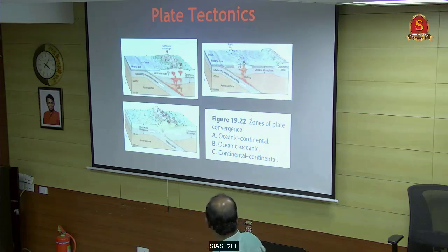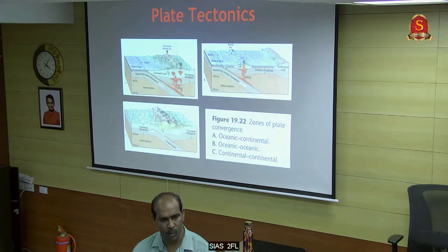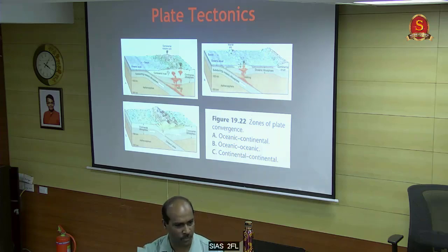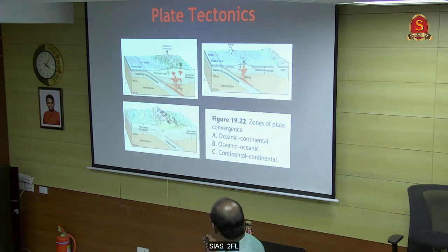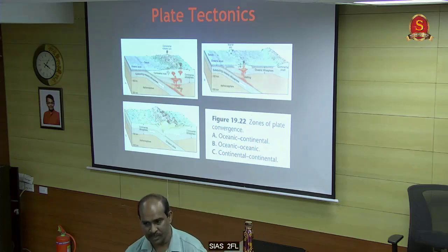Ocean-ocean collision - when two ocean plates collide, we get island arcs. That is how the Philippines and other island formations occurred. Then we have continental-continental collision, which creates the Himalayas.